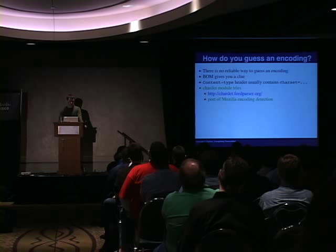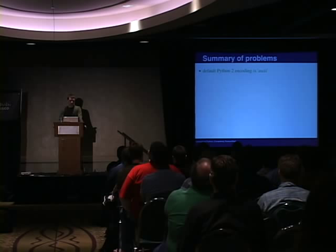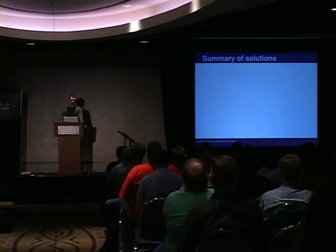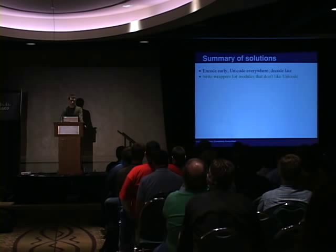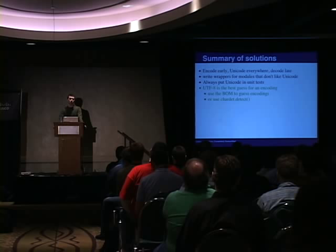To summarize: the default encoding sucks, a file might contain a BOM that you might have to remove, and not all Python 2 built-ins support unicode. You can't reliably guess encoding. The solutions: decode early, use unicode everywhere, encode late. Write some hacky wrappers for modules that don't like unicode. And always test with unicode input, because that's the best way to exercise your modules and the third-party modules you use. When you do need to guess, UTF-8 is the best option, and you can use the BOM to help, or use chardet.detect.